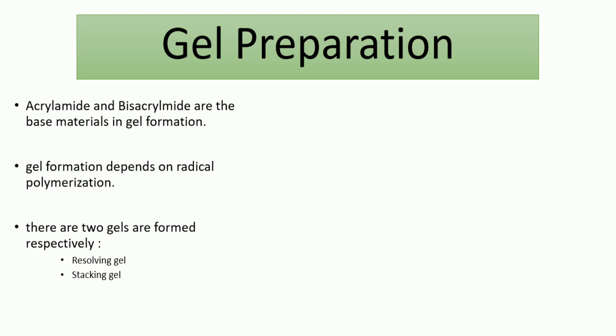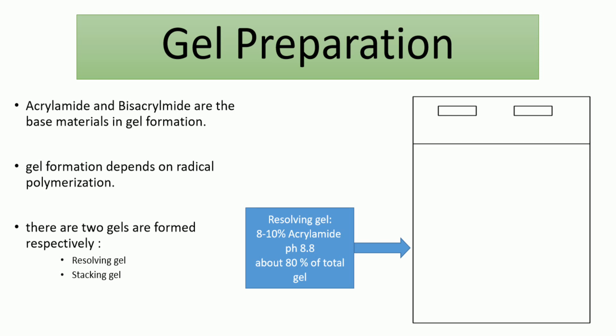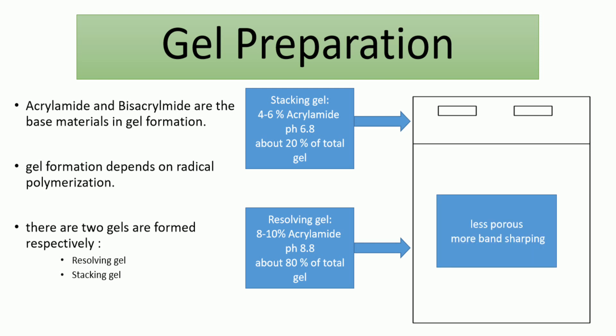Resolving gel is poured first and is at the bottom of the gel. The resolving gel is higher in acrylamide and bisacrylamide concentration, more alkaline, and takes the majority of the chamber—about 75 to 80 percent of the total gel. We also have the stacking gel, which is lower in acrylamide concentration, more acidic, and takes only 20 percent of the gel. Because of that, the resolving gel is more porous, which allows better band sharpening or separation.